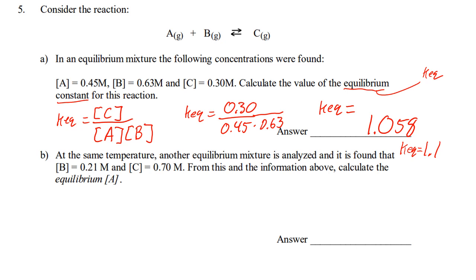Now, here's a key point. It says, at the same temperature. If it's the same temperature, that means it has the same KEQ. So, if it says the same temperature, that means we know KEQ is going to equal 1.058. Or, you can write 1.12. And, it is analyzed that B equals 0.21 molarity, and C equals 0.7. So, we're going to plug that into our KEQ expression.